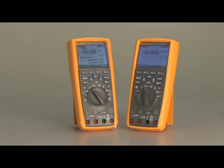The 289 and 287 are not only the most advanced, but also the most user-friendly DMMs yet.